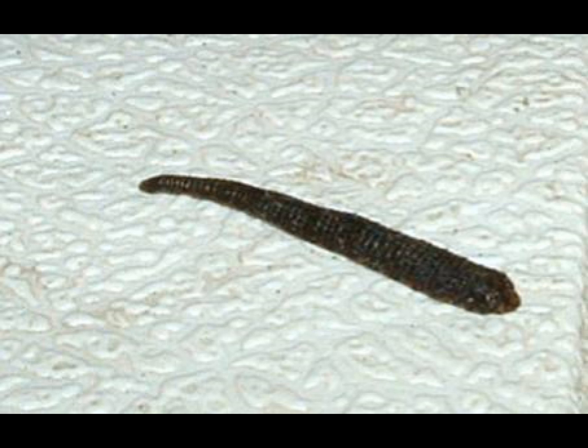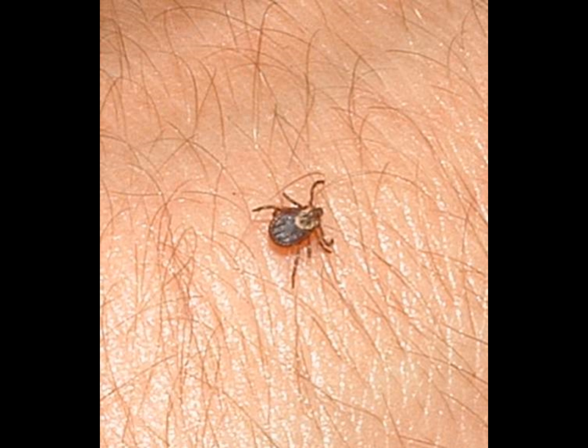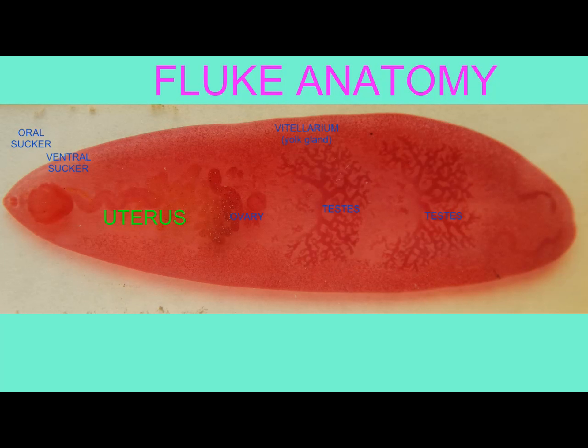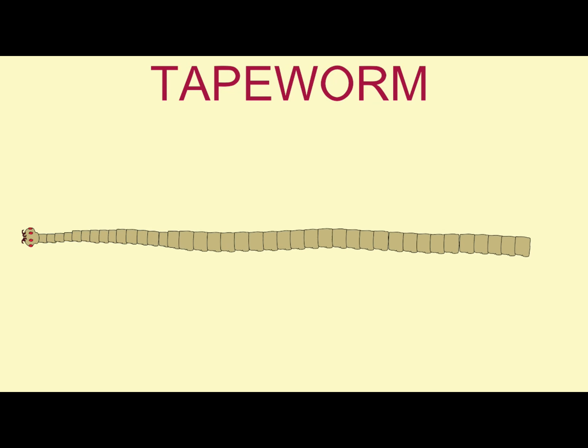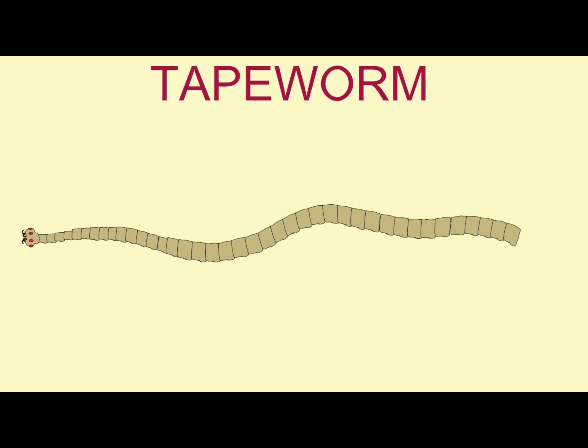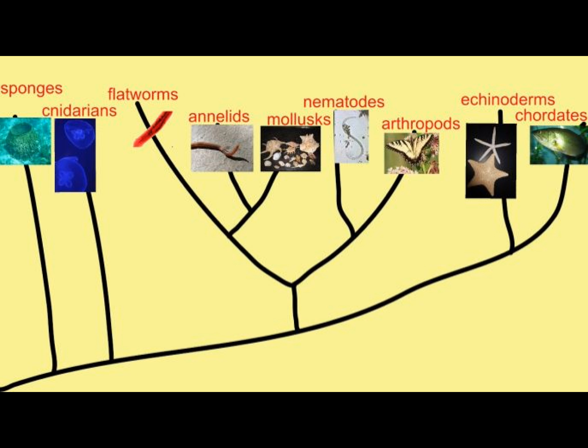A number of the invertebrates are parasites. Some are ectoparasites attaching to the outside — this would include leeches and ticks — while others are endoparasites living inside an organism, such as flukes, tapeworms, and many nematode worms.